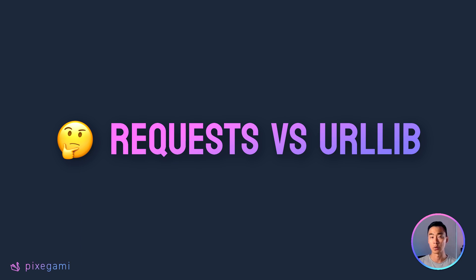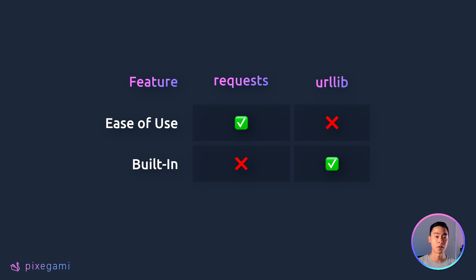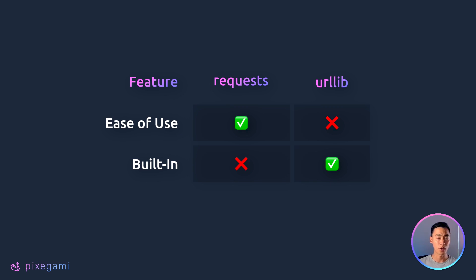So far, the requests module is looking pretty useful. But how does it compare to its alternatives? Python actually has a built-in module called urllib that you can also use to make HTTP requests. The main difference between this and the requests module is the level of abstraction they offer, which directly impacts how easy they are to use. Here's an example POST request in urllib — it does the same thing, but compared to the requests version it's less intuitive to work with. Generally, I think requests is a better choice because its abstractions are higher level and you can get started much faster. But if you are constrained by what modules you can install, or want to stick to built-in modules, then urllib will also get the job done.